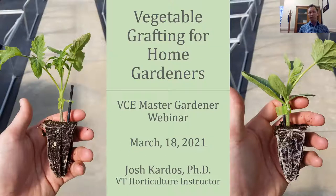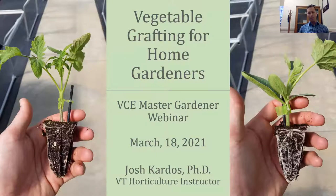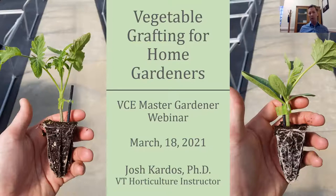I teach five different classes here: indoor plants, plant propagation, herbaceous landscape plants, greenhouse management, and ornamental plant production and marketing. I'm also developing two new courses on controlled environment agriculture. Previously, for the four years before coming to Virginia Tech, I worked in North Carolina and helped manage a startup internationally owned vegetable grafting operation. I have quite a bit of experience in vegetable grafting — the company was owned by an Italian company, an Israeli company, and an American company, so I spent quite a lot of time in Italy and Israel visiting their nurseries and learning more about grafting.